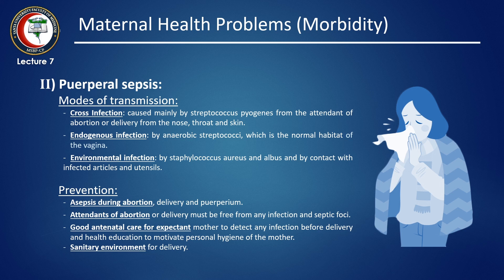Prevention of puerperal sepsis: perform asepsis during abortion, delivery, and puerperium. Attendants at abortion or delivery must be free from any infection or septic foci. Achieve a good sanitary environment for delivery. Lastly, good antenatal care for expectant mothers, aiming at early detection of any infection before delivery and health education to motivate personal hygiene.